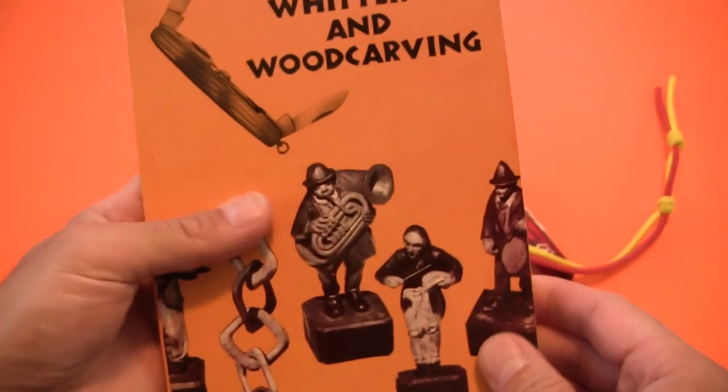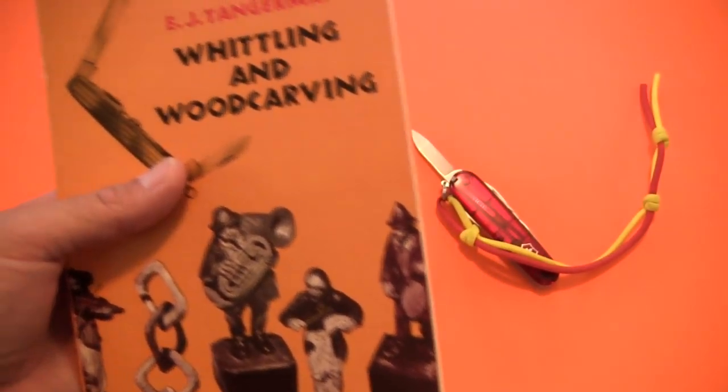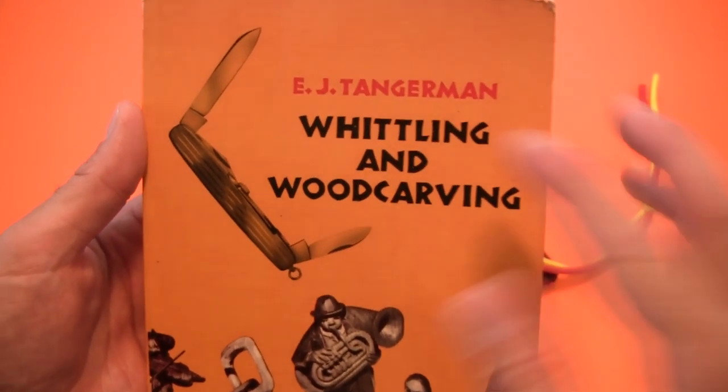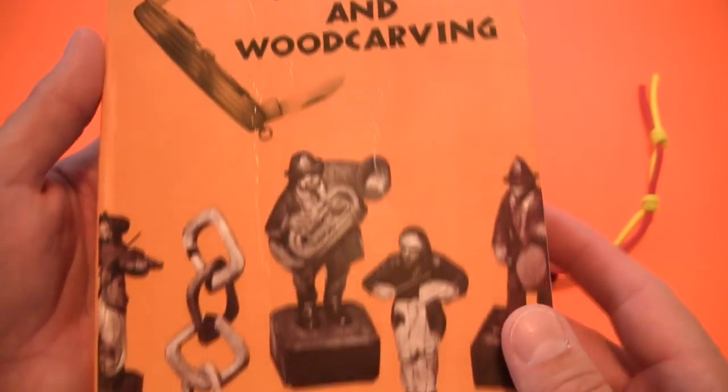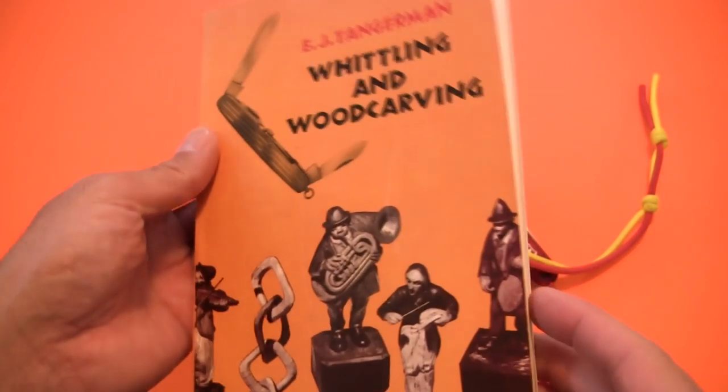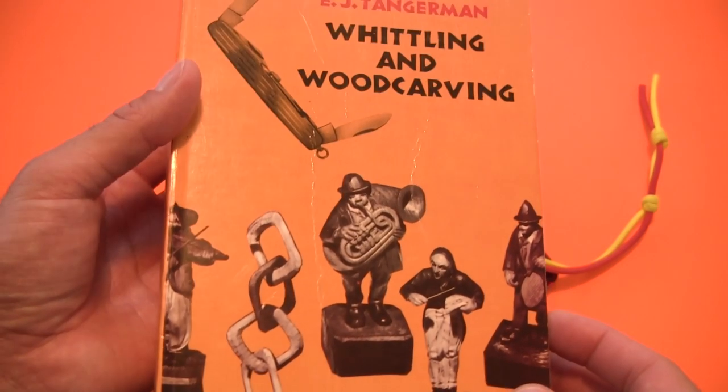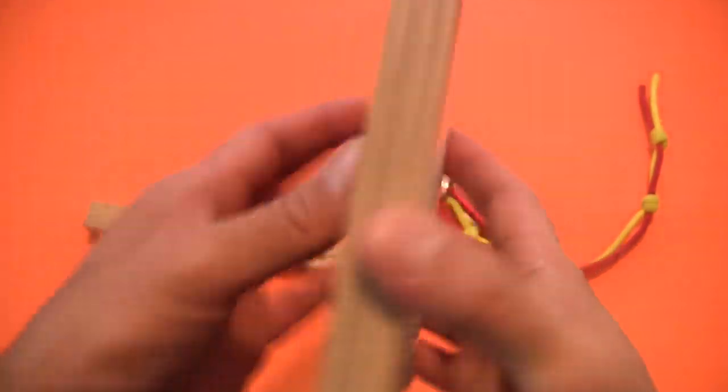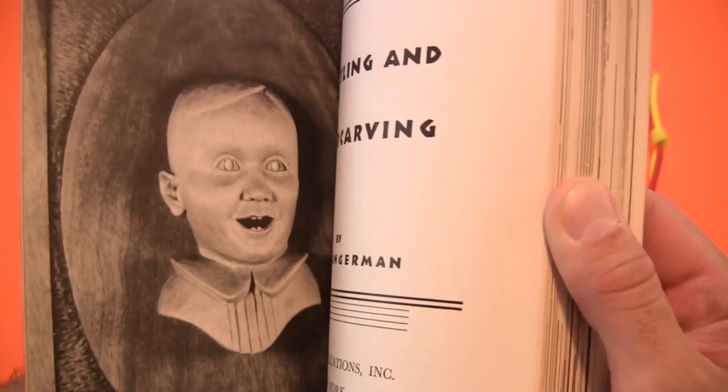If you hit up some of these whittling forums that are out there online, almost everyone universally will recommend this book. E.J. Tangerman, I don't know how you pronounce that, but he is the author of this book. This book is actually really old, it's been reprinted several times. I bought this off of eBay I think it maybe cost three or four dollars shipped and I've had it for some time, probably 10 years. It's a very popular and common book. Like I said, you'll see it recommended all over the place online.